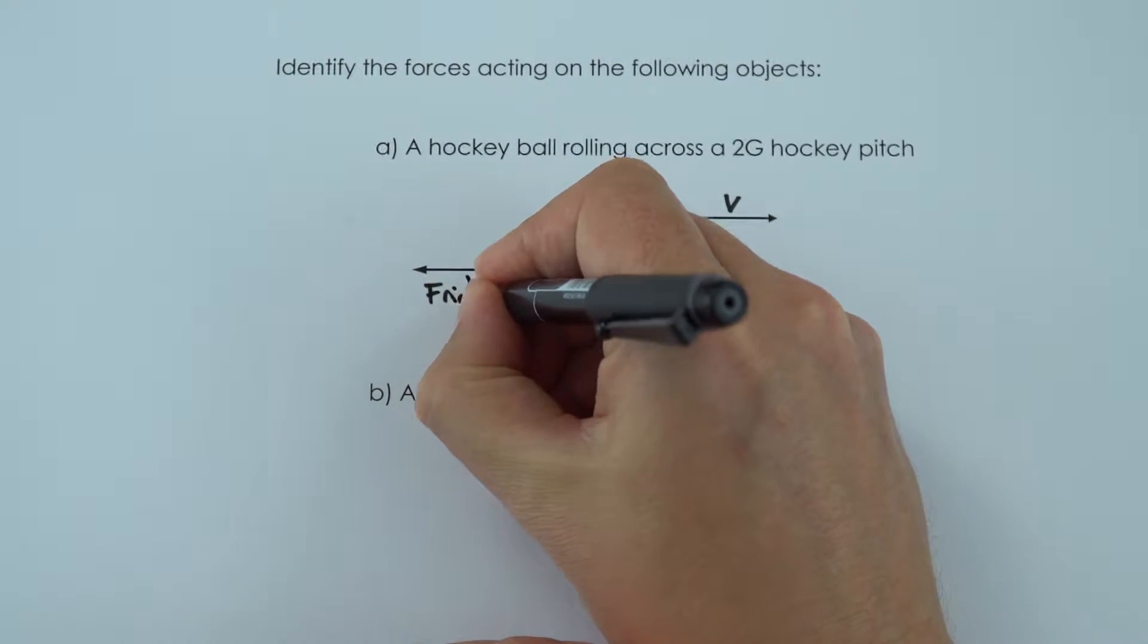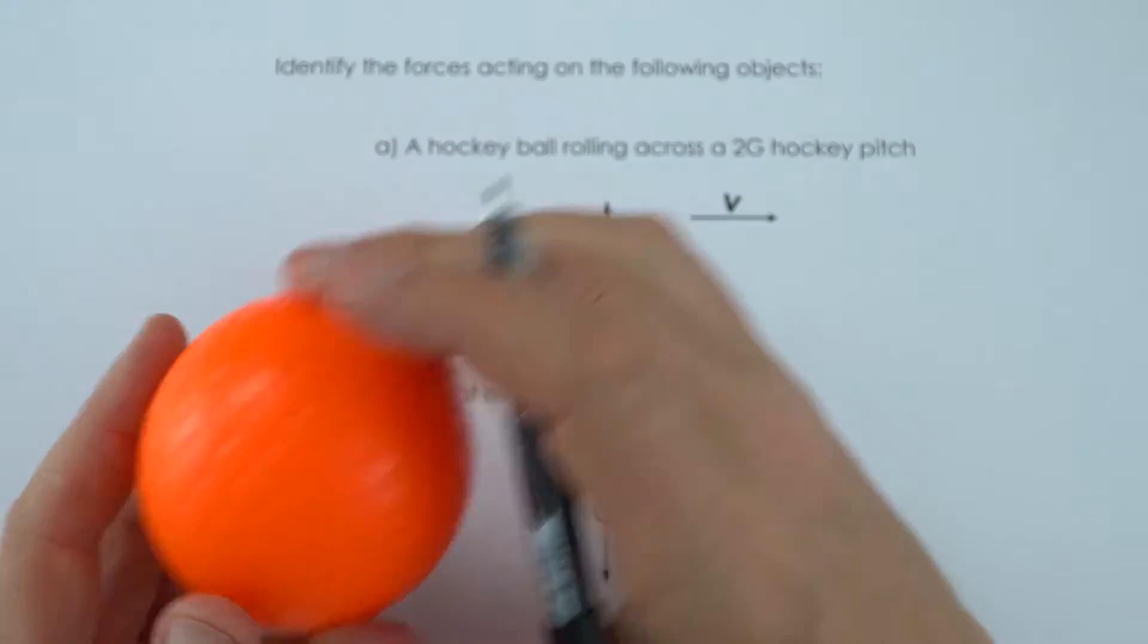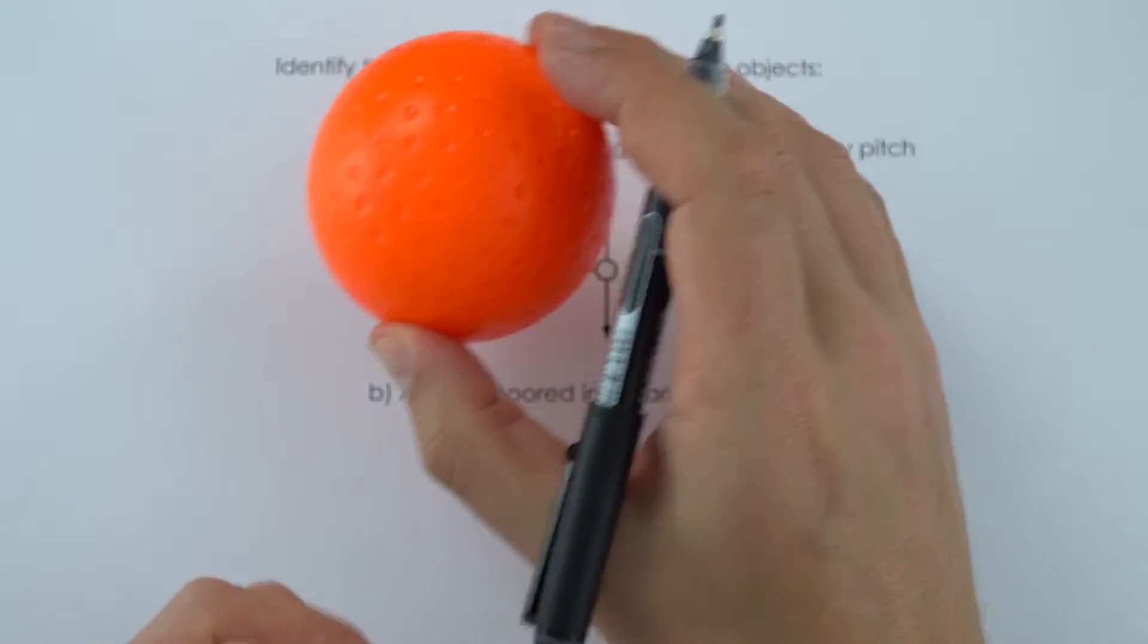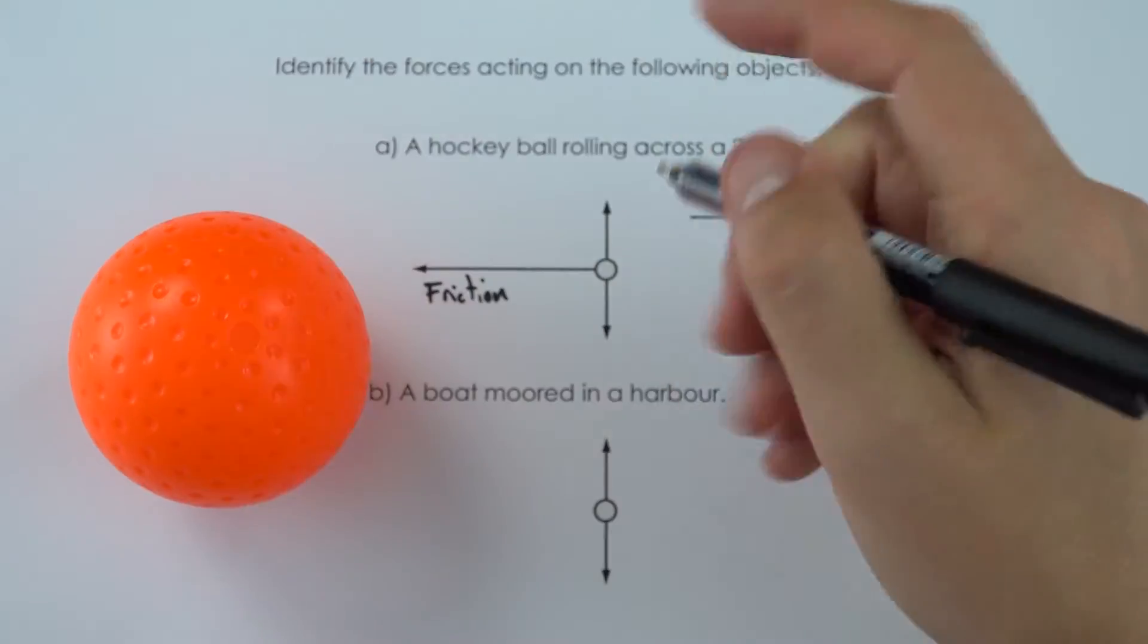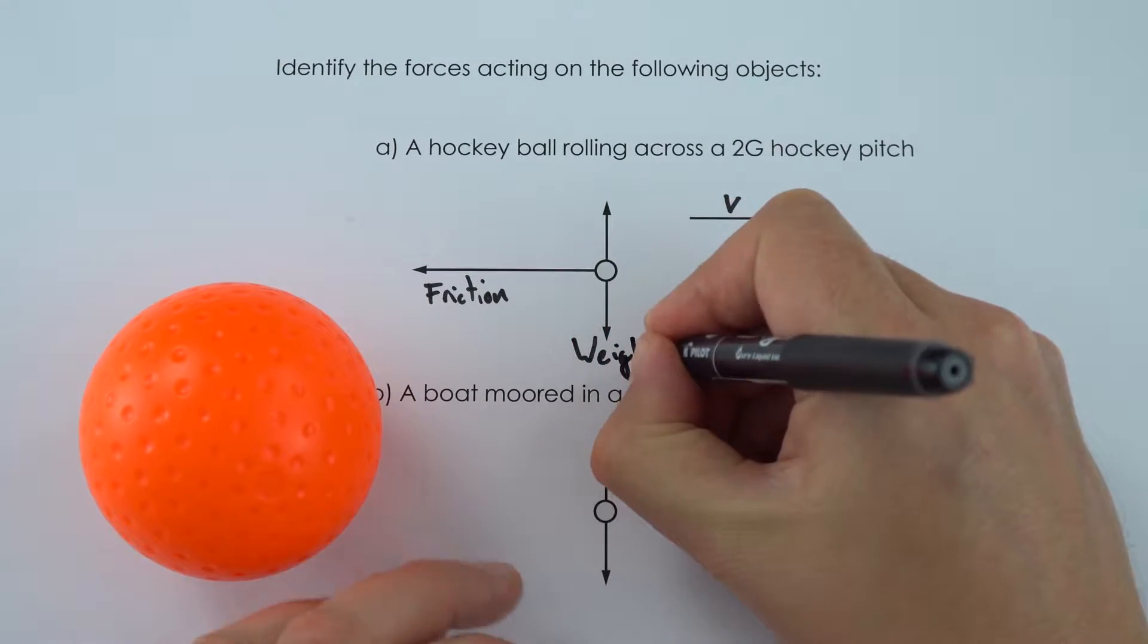And this is going to be friction between the ball and the ground and also perhaps some air resistance as well. Now the other forces which are acting on this ball which is on the ground, there's going to be its weight which is acting downwards.